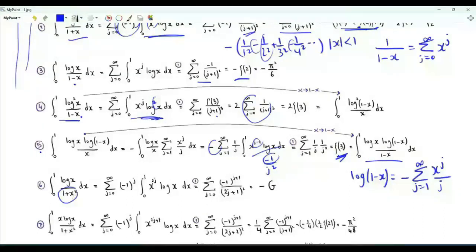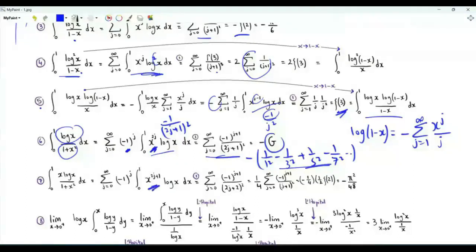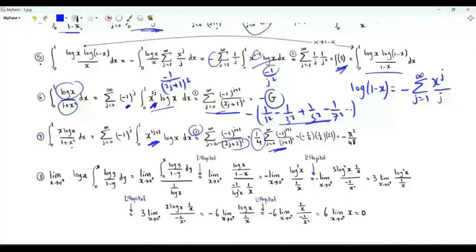With 1/(1+x²) as denominator, the series gives (−1)^j·x^(2j), and integrating yields −Σ(−1)^j/(2j+1)², which inside the bracket is Catalan's constant G. For x·log(x)/(1+x²), the integrand gives x^(2j+1), leading to a sum that factors as (1/4)·(−1/2)·ζ(2), so the integral from 0 to 1 of x·log(x)/(1+x²) = −π²/48.